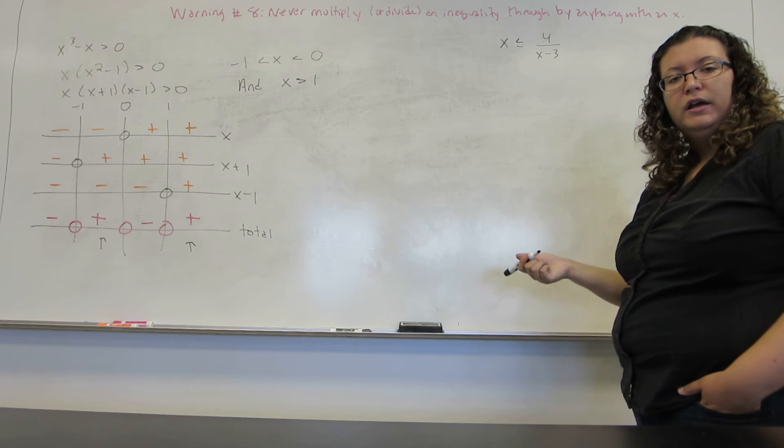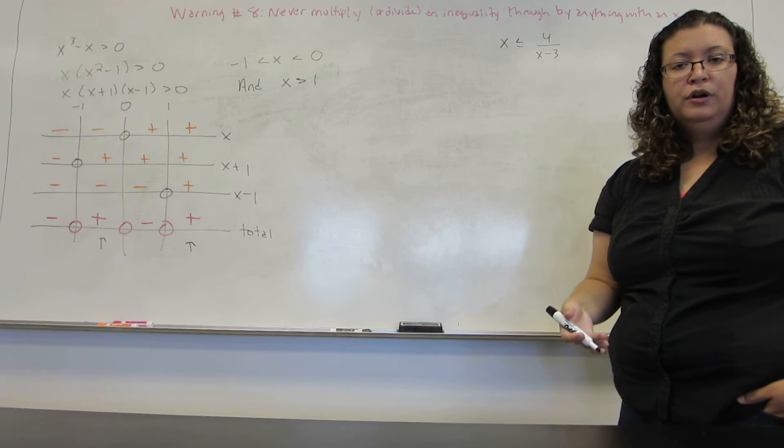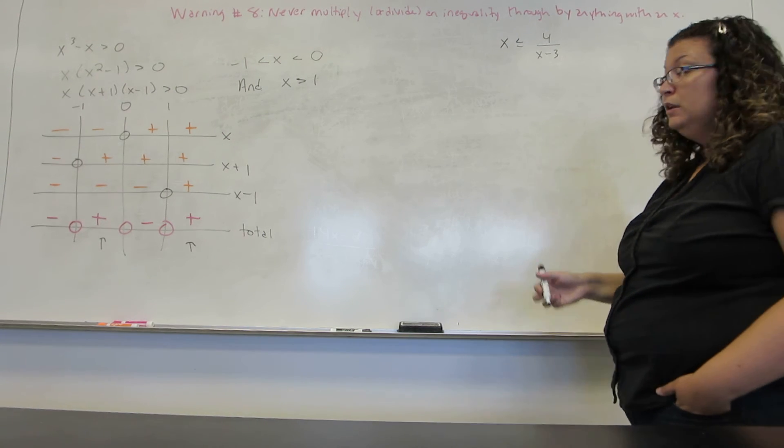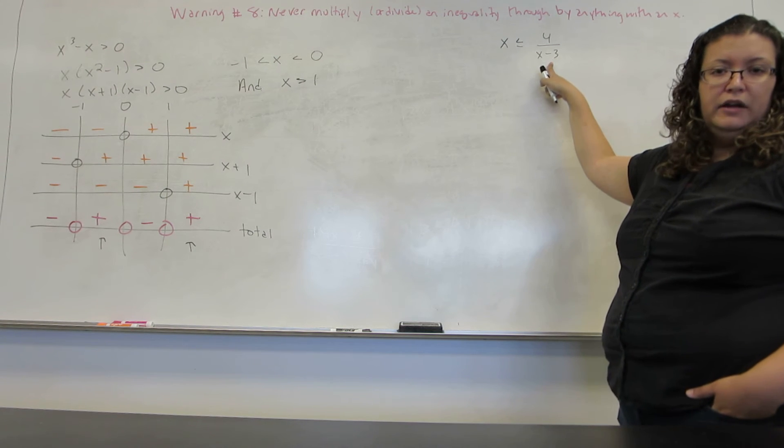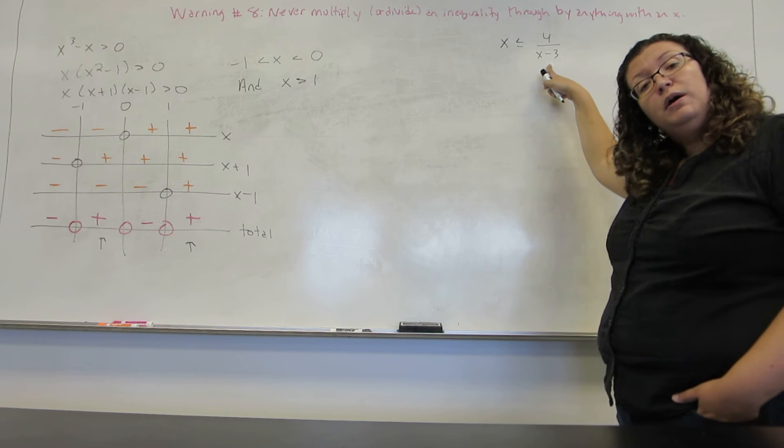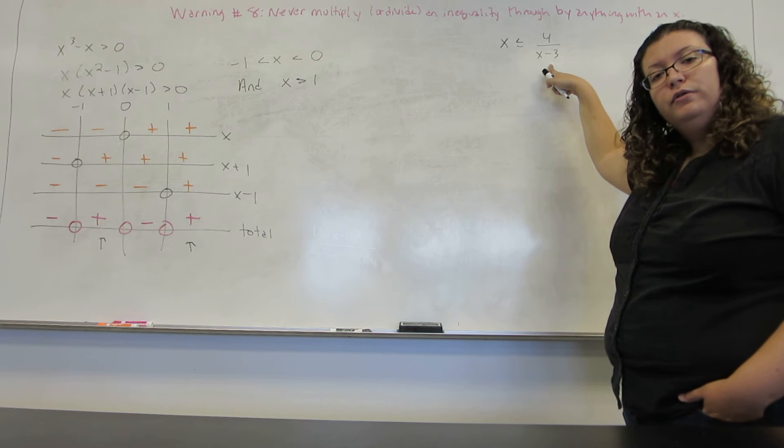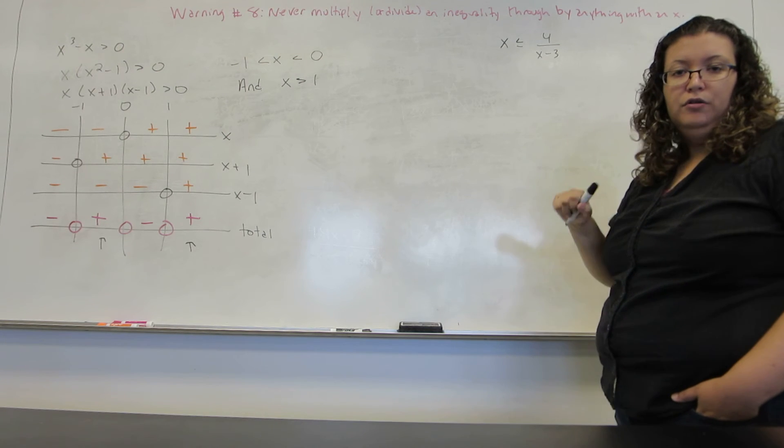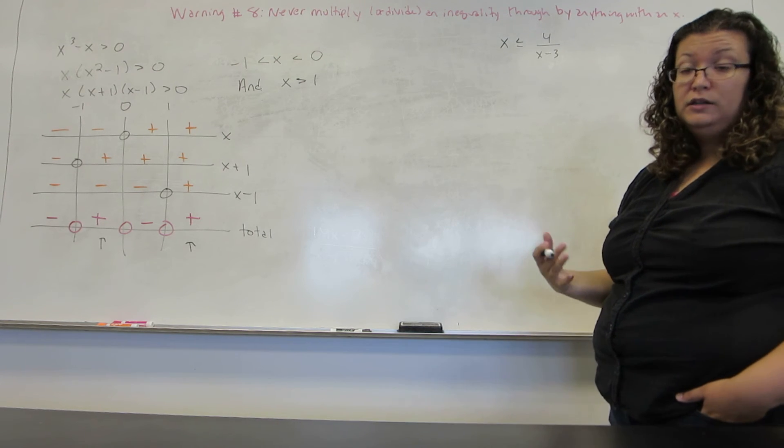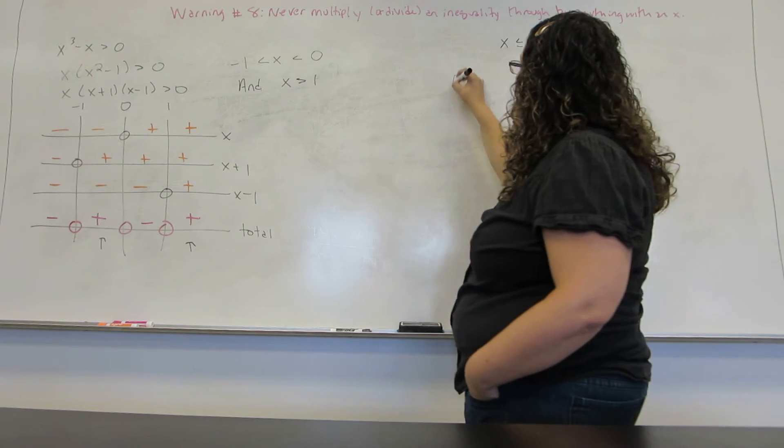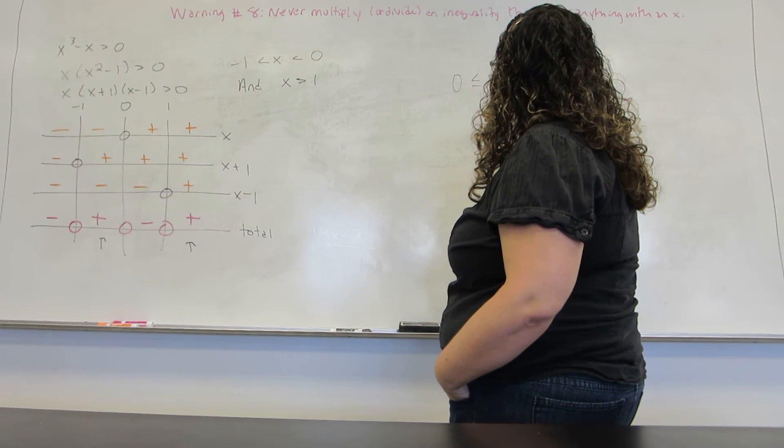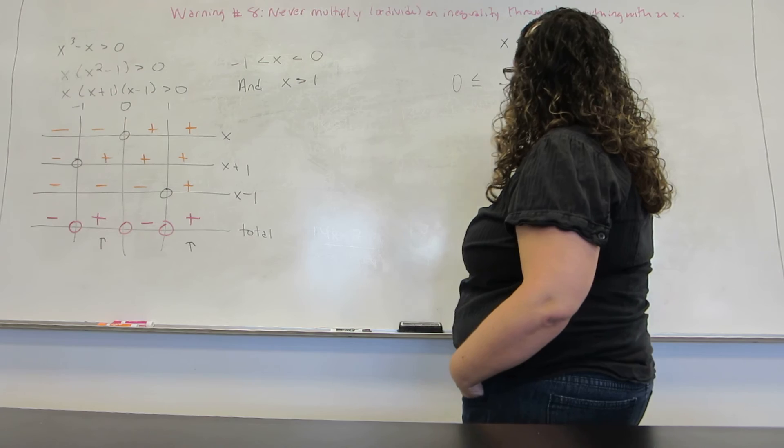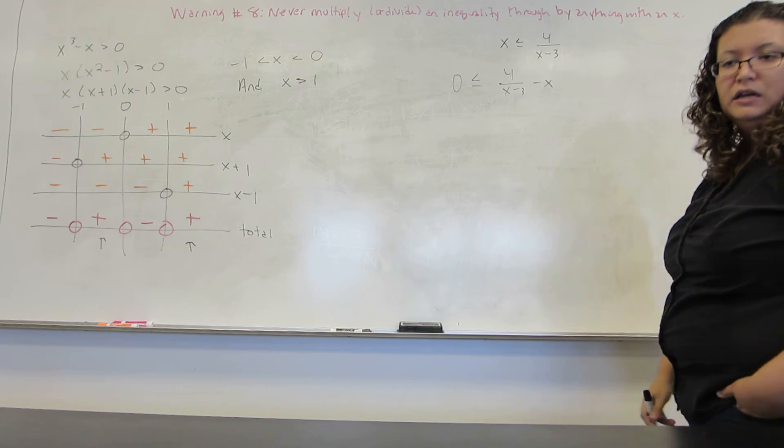When you multiply an inequality by a negative number you have to flip the inequality. If I were to multiply the inequality by X minus 3, I don't know if it's a positive or negative number. So I don't know if I have to flip the inequality or not, which means I simply have to avoid it. So the only way around this is to subtract the X over so that I can get a zero on one side.